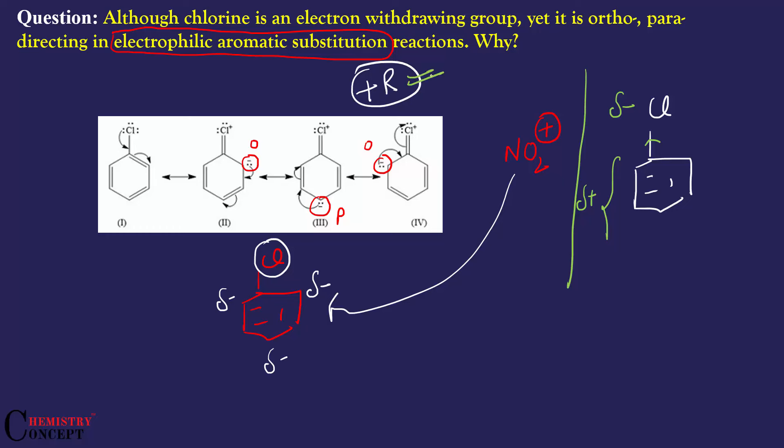On the other hand, the -I effect decreases electron density and reactivity. Both effects are opposite, but inductive effect dominates over resonance effect. So chlorine decreases the overall electron density and reactivity of benzene. This is why it is ring deactivating.